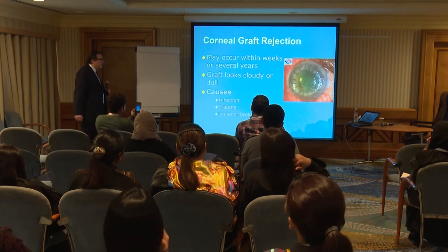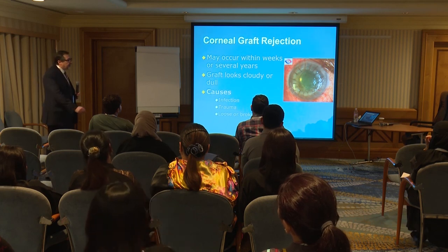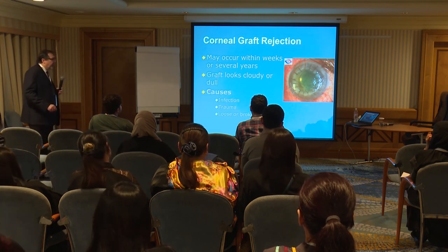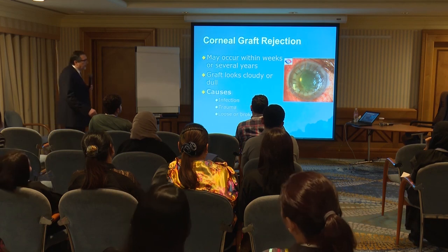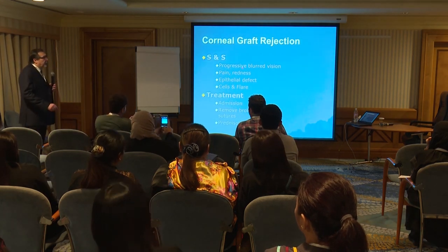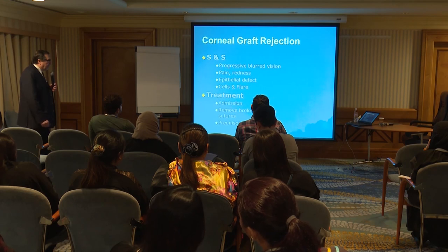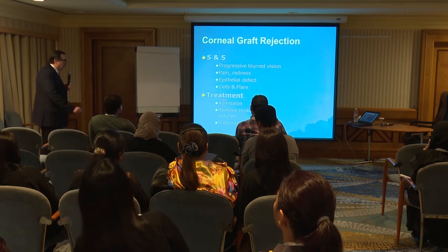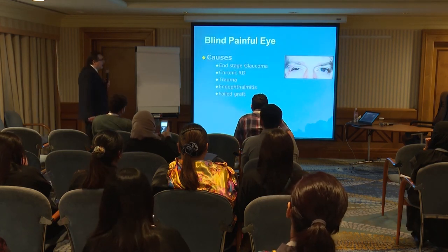Patients with corneal graft rejection also come to the emergency room. It may occur within weeks or several years after surgery. The graft appears cloudy and dull. It can happen from infection, trauma, bruising, or broken sutures — whenever we see broken or loose sutures we must remove them and treat the patient. The patient comes with progressive blurred vision, pain, redness, epithelial defects, and inflammatory cells. Some patients need admission; others do not. We remove the broken or loose sutures and give prednisolone drops hourly.